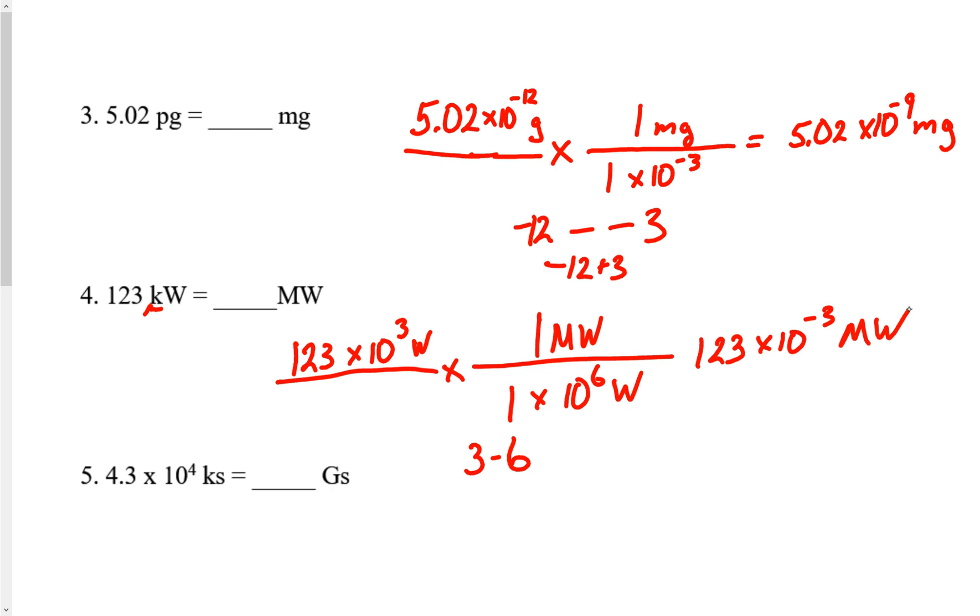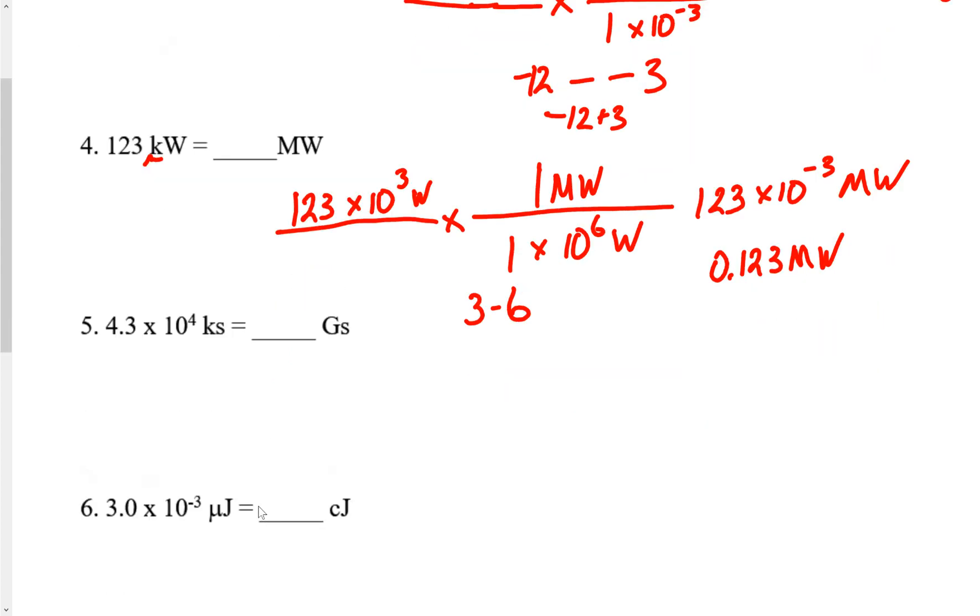If you're working on a computer and it won't let you type this in scientific notation, just undo it. Negative 3 means move the decimal 1, 2, 3 to the left, so that'd be 0.123 megawatts. You may have to do that, so don't be shocked.